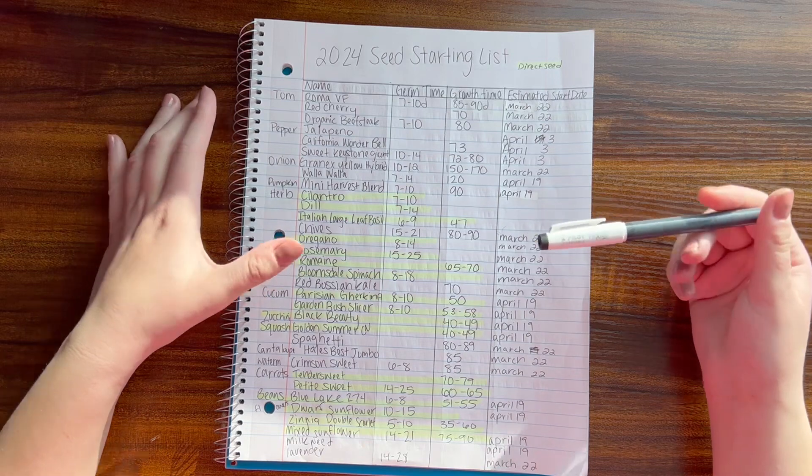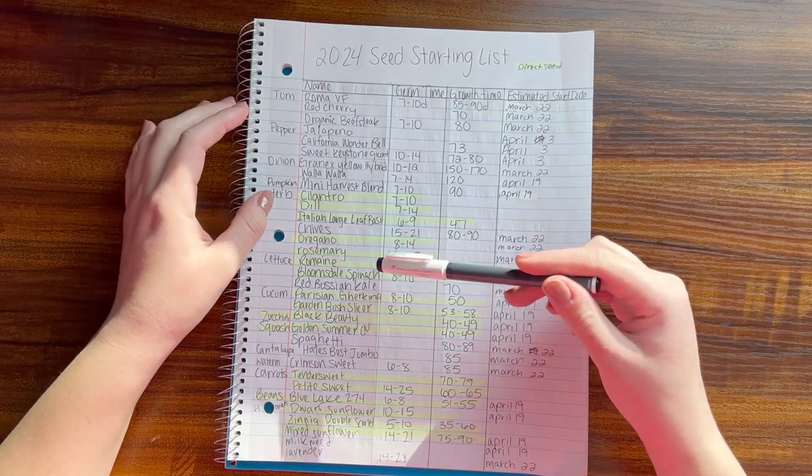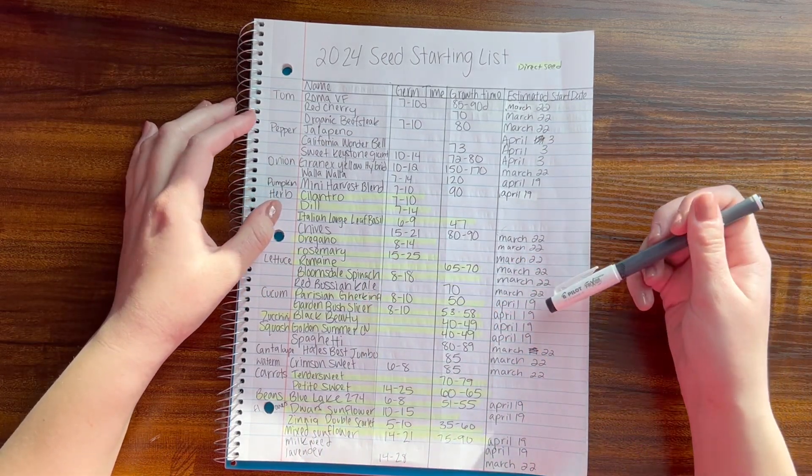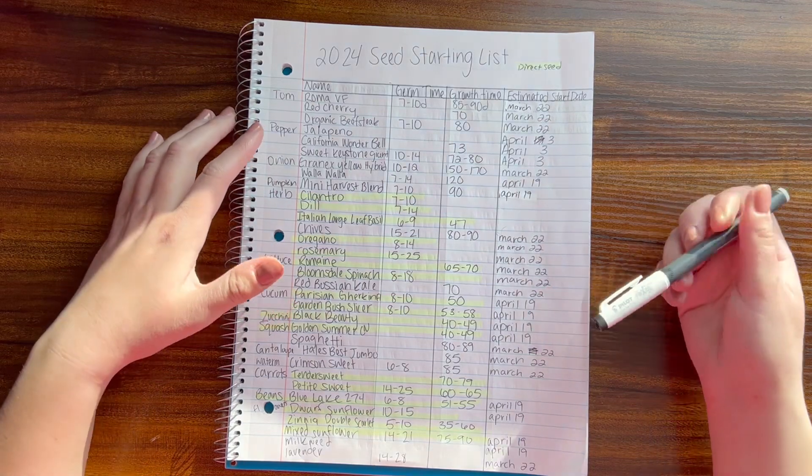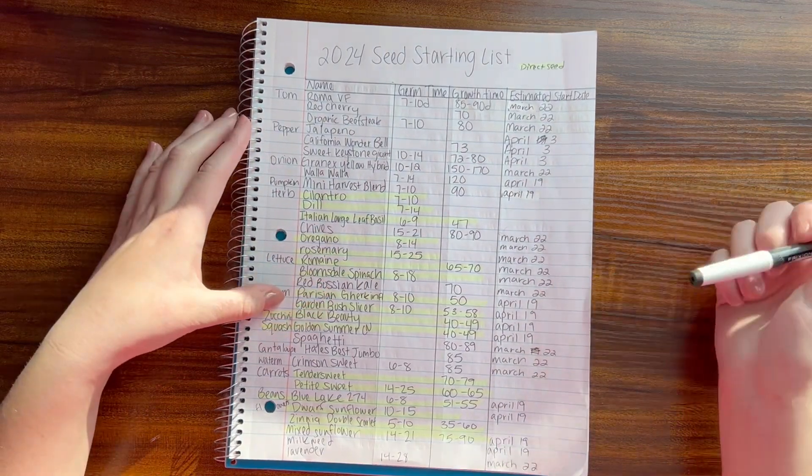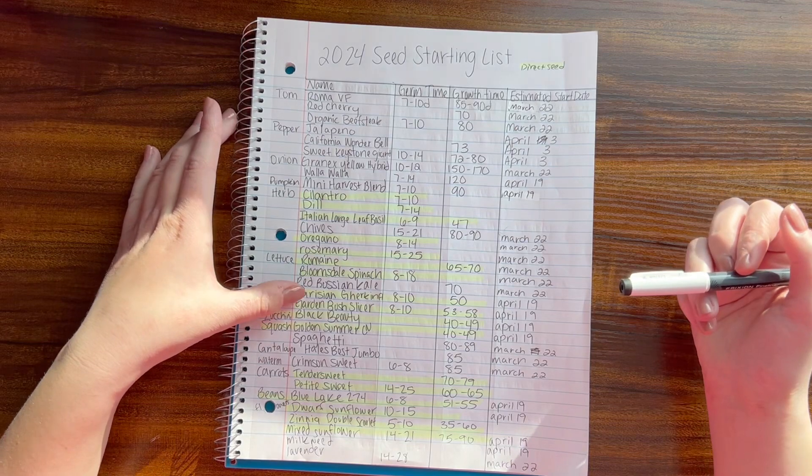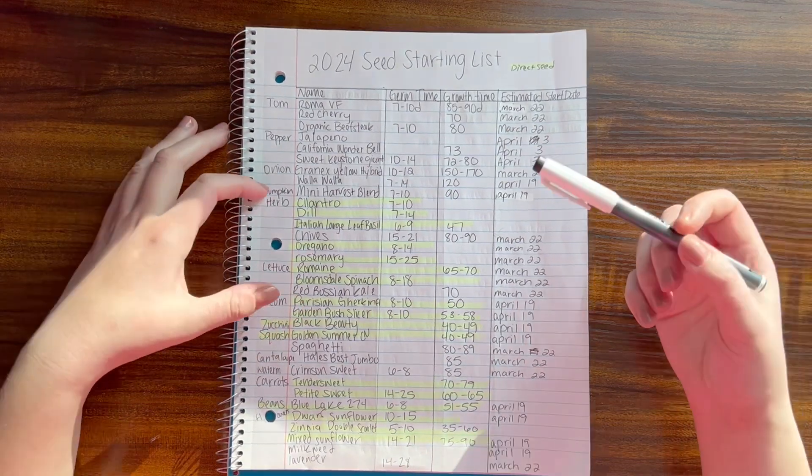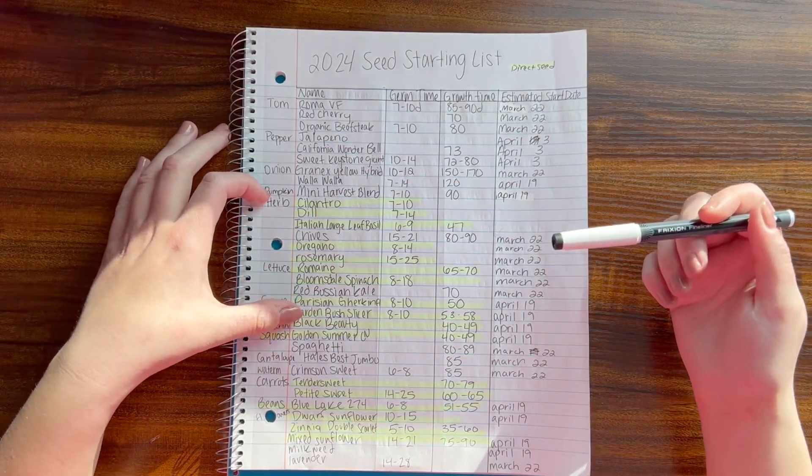For cucumbers, I'm going to do the Parisian gherkin ones. I'm going to start those inside on the 19th, and then Garden Bush Slicer also on the 19th. These ones I'm going to use for pickles. I can't remember if these are small pickling ones as well or if they're just normal sized, I don't remember, but I can always use both.